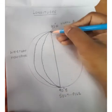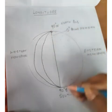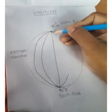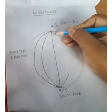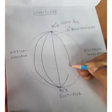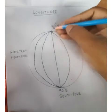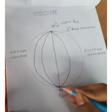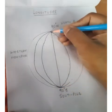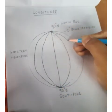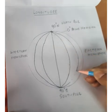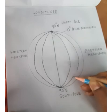Now, again from north to south, draw a curved line. Remember, these lines should be meeting at the poles.